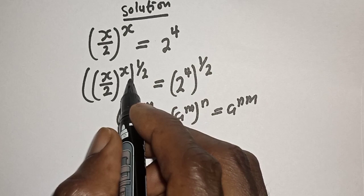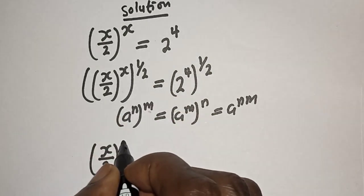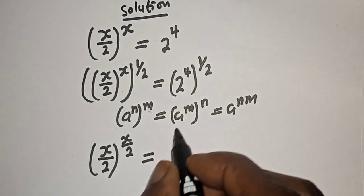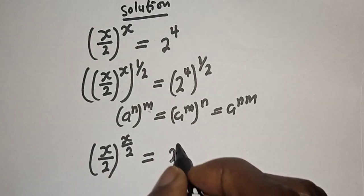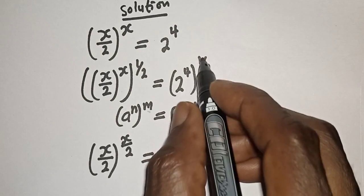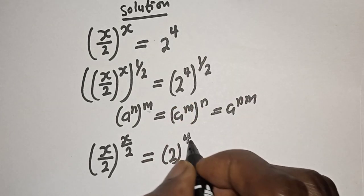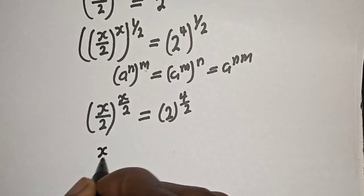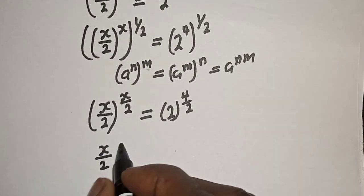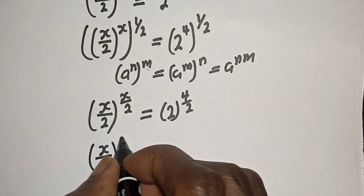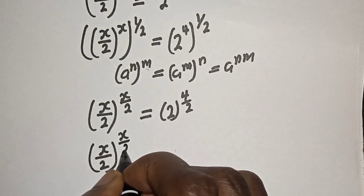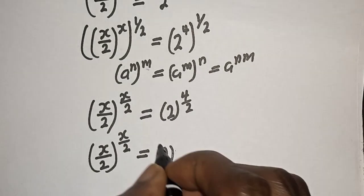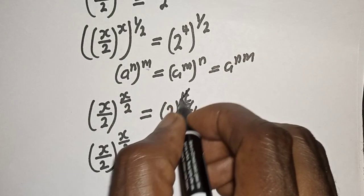Applying this rule, (s over 2) raised to power (s times 1/2), which is s over 2, is equal to 2 raised to power (4 times 1/2), which is 4 over 2. So we have (s over 2) raised to power (s over 2) is equal to 2 raised to power 2.